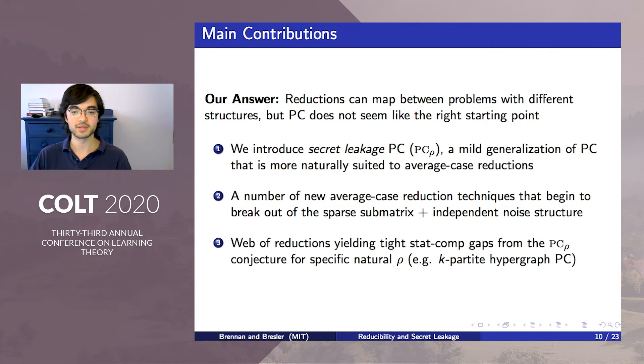We introduce secret leakage planted clique, or PC-rho, and a mild generalization of the PC conjecture, more naturally suited to average case reductions. We then give a number of new reduction techniques that begin to break out of the structural limitations of prior reductions. And finally, we use these techniques to deduce tight statistical computational gaps in a wide range of problems from hardness assumptions in a few natural instances of PC-rho.